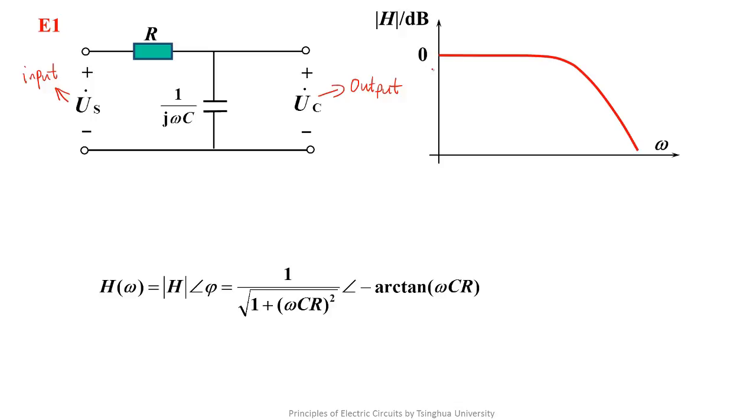We draw the AF characteristic of the transfer function like this. Here we need to emphasize that 0 refers to 0 dB. According to the knowledge we taught in lecture 69, dB equals 20 times log UO over Ui. So 0 dB means UO over Ui equals 1.